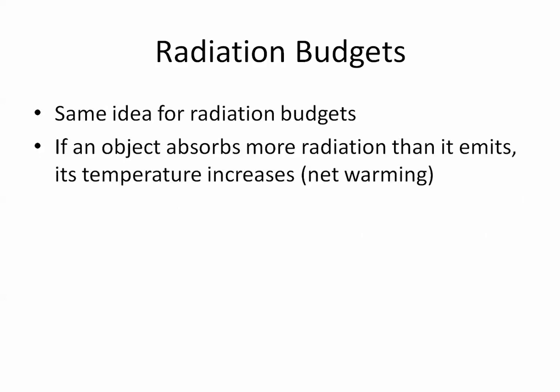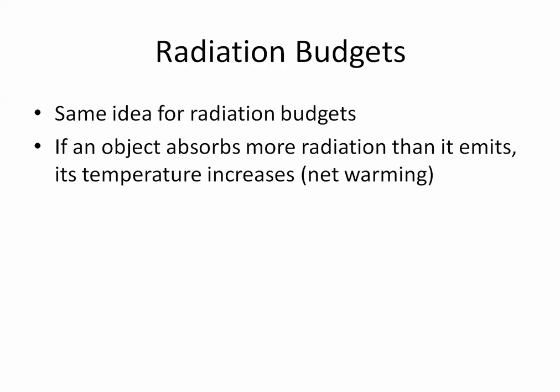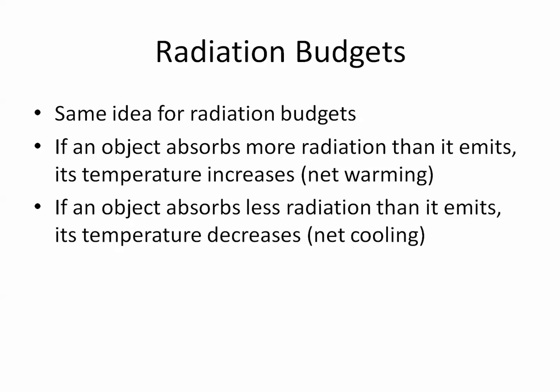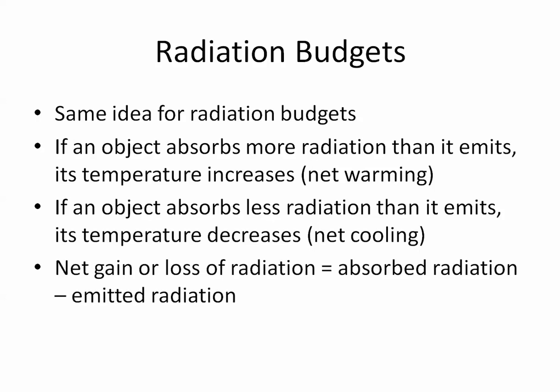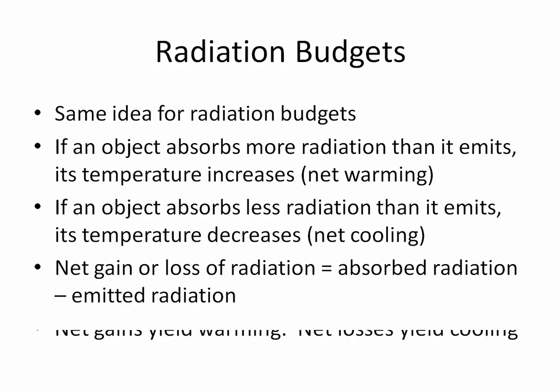Radiation budgets are very similar. If an object absorbs more radiation than it emits, then its temperature will increase — it will have a net warming because more radiation is coming in than is going out. On the other hand, if an object absorbs less radiation than it emits, its temperature will decrease. To figure out a net gain or loss of radiation, you take your absorbed radiation and subtract the emitted radiation. A positive value yields warming; a negative result yields cooling.